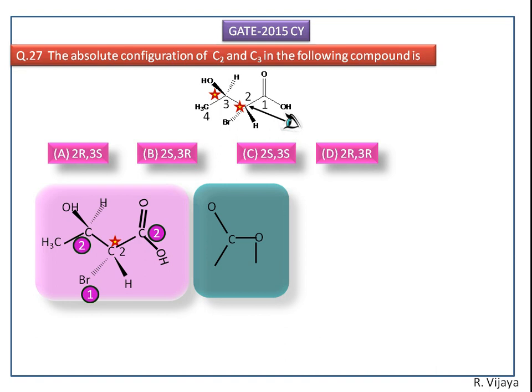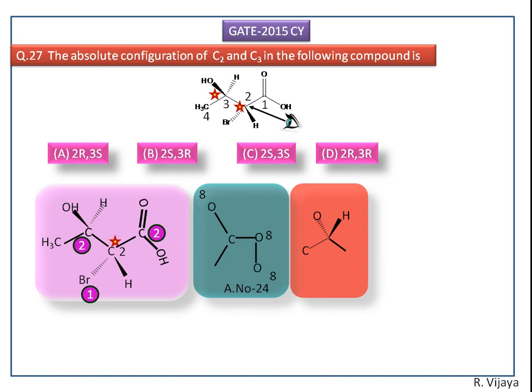This carboxylic acid group — the carbonyl carbon C1O — becomes like this. Now we count the atomic number of the atoms attached to the carbon atom. The total atomic number of this carboxylic acid group is 24. Next we consider the left side carbon atom, where the atomic number is 15.